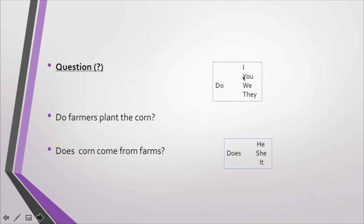Y además, el do nos va a indicar si es que el sujeto es I, you, we, or they. Y el does nos va a indicar si es he, she, it.